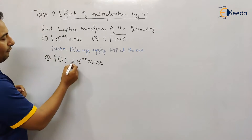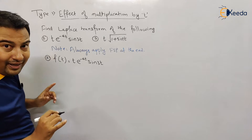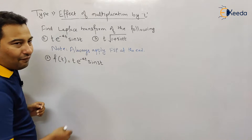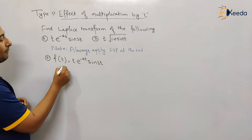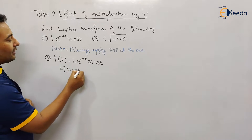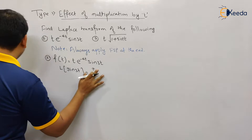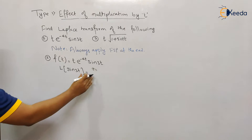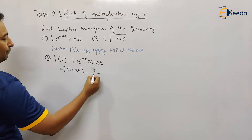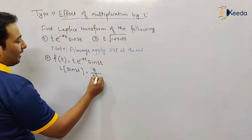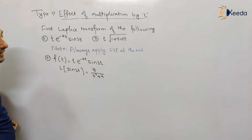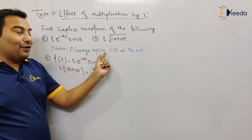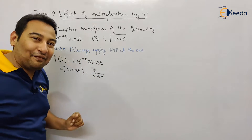So let us move on. Forget about the properties for now — forget about effect of multiplication by t, forget about FSP. You are left with: what is Laplace of sin(3t)? Laplace of sin(3t) is 3/(s² + 9). So here it will be 3/(s² + 9). What next? We know the note — we're going to apply FSP at the end.